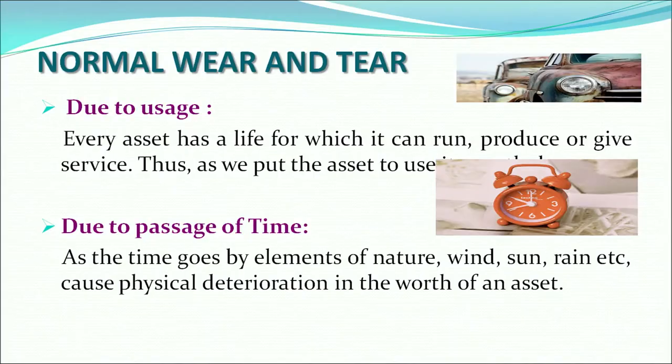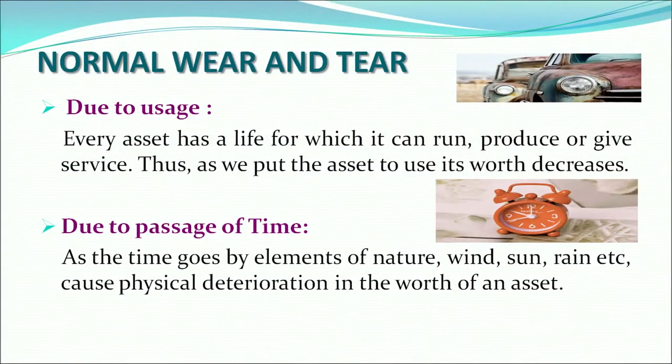Let us understand the causes of depreciation. Normal wear and tear leads to reduction in the value of the asset primarily because of two reasons: first, due to usage, and second, due to the passage of time. Every asset has a particular useful life during which it gives production or services. Constantly using it over the years causes a decline in its value. Even if the asset is lying idle, elements of nature such as wind, sun, and rain cause physical deterioration and reduce its value.